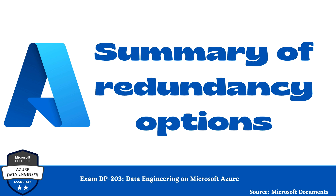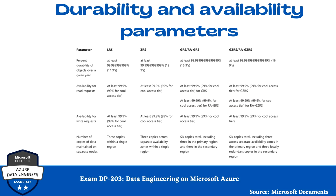Now let's have a look at the summary of redundancy options. In this video we talked about LRS, ZRS, GRS or RA-GRS, and GZRS or RA-GZRS. Everything is now in front of you on your screen — you can pause and have a look at the availability time, percentage durability of objects over a given year, and the number of copies of data maintained on separate nodes. This will be very helpful when you are designing your Azure storage account or from an exam perspective.